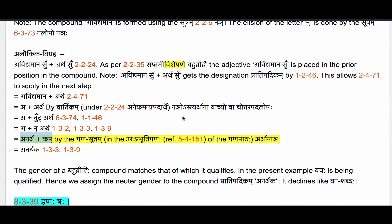The conditions for applying this Ganasutram are satisfied here because we do have a Bahubrihi compound which has the negation particle Nai as its prior member and Artha as its final member. The augment Nut has simply come and joined Artha — remember, an augment is Mitravad Agamaha, it only joins and does not destroy what is there. So now we attach the Samasanta Pratyaya Kap to this compound Anartha using the Ganasutram Arthan Nanyaha.